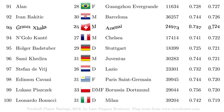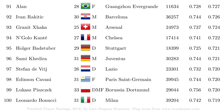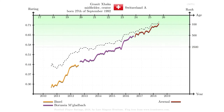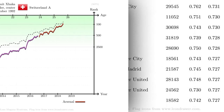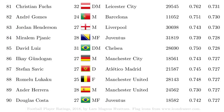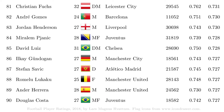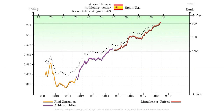In rank 93 we have Granit Xhaka, the highest rated player from Switzerland and one out of three players from Arsenal in the top 100. Spain is the country with the most players in the top 100, with 15 players in total. Ander Herrera is one of them at rank 89. He has two caps for Spain, but these were friendlies and are not included in the database.